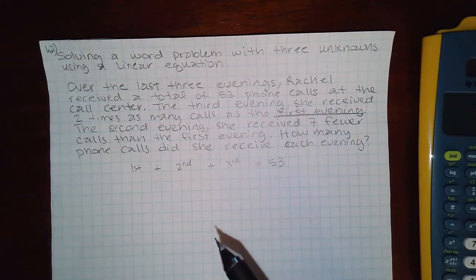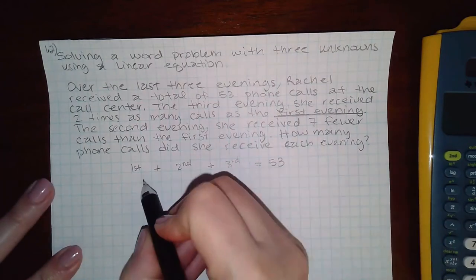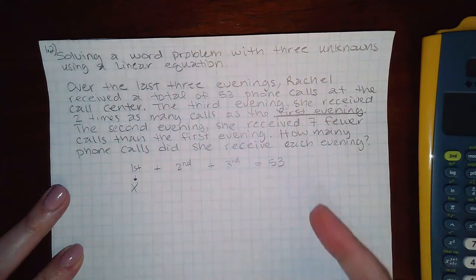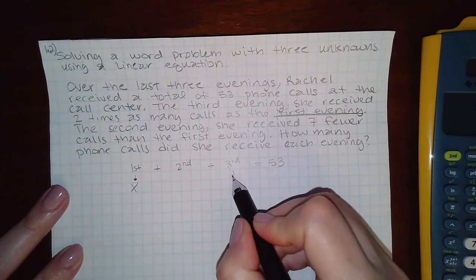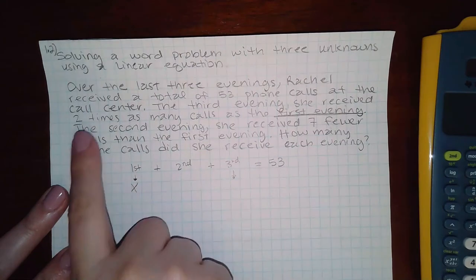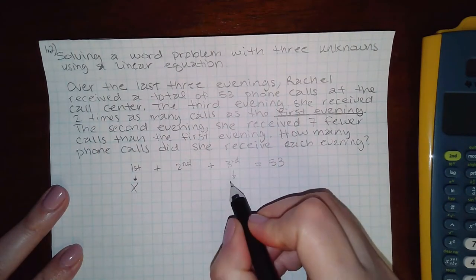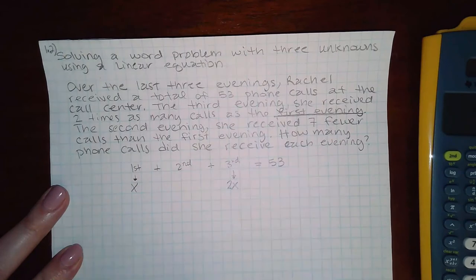For me, that means the first evening is going to be x because that's the one being used to describe the others. Now when I use that description, two times as many as the first evening, this expression would be 2x.